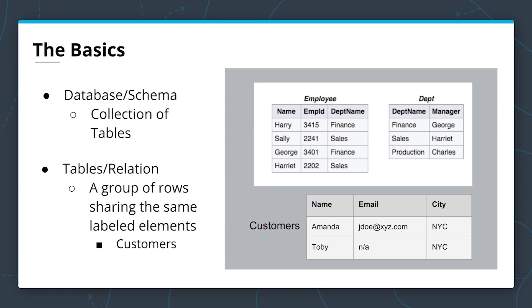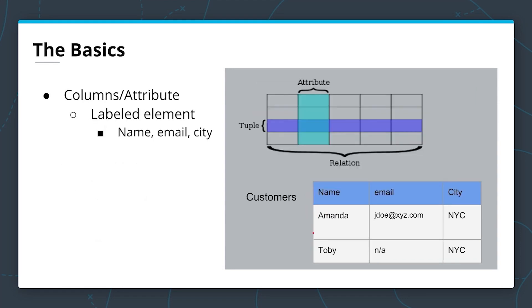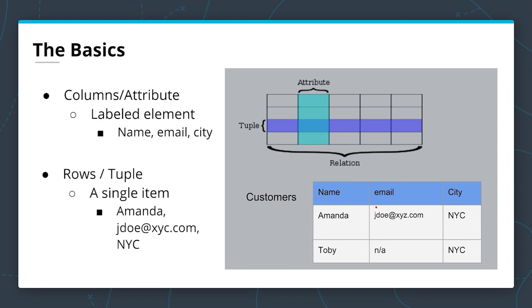Let's look at our customer table. In this case, it's a table living inside and housed in a database. It has a variety of columns: name, email, and city. We have columns or attributes, which are the labeled elements — in this case, name, email, or city. And then we have rows and tuples. In this example, a single row might be the first row in the table: Amanda, with email janedoe@xyz, and city NYC.